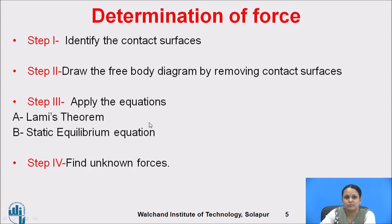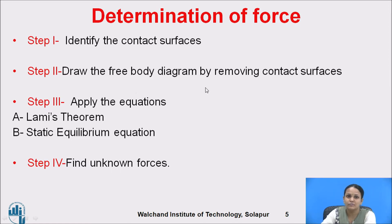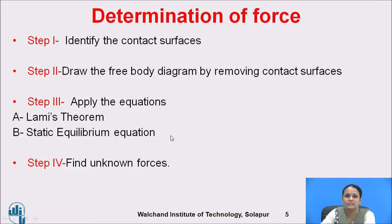These are the four steps to determine the forces present in the given member: identify the contact surfaces, draw the free body diagram, apply the conditions of equilibrium — we can apply Lami's theorem as well as the static conditions of equilibrium — and find out the unknown forces.